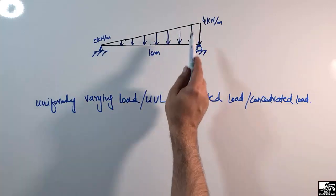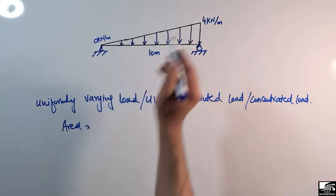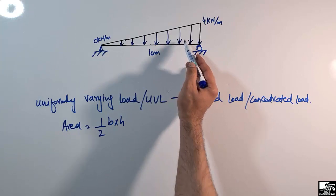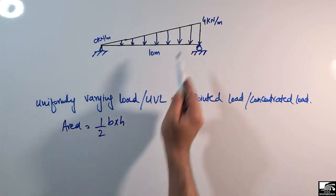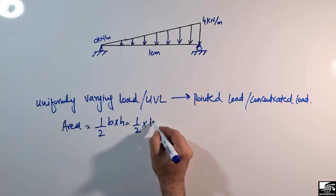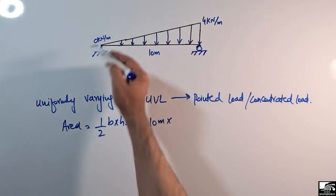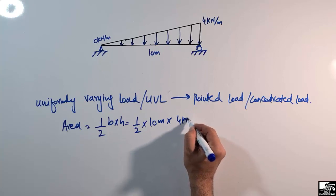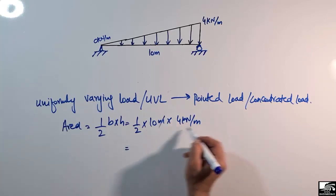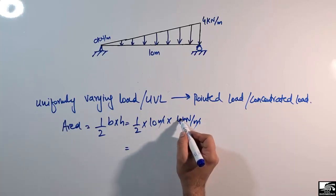To convert this uniformly varying load, or triangular load, we first find the area of the load diagram. Since the load is triangular, the area equals half base times height. Here, the base is 10 meters and the height is 4 kN per meter. So the area is half times 10 times 4.